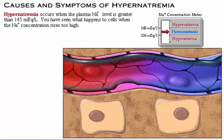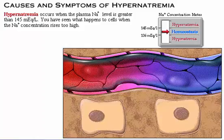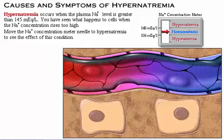The normal plasma sodium level is 136 to 145 milliequivalents per liter. Hypernatremia occurs when the plasma sodium level is greater than 145 milliequivalents per liter. Move the sodium concentration meter needle to hypernatremia to see the effect of this condition.